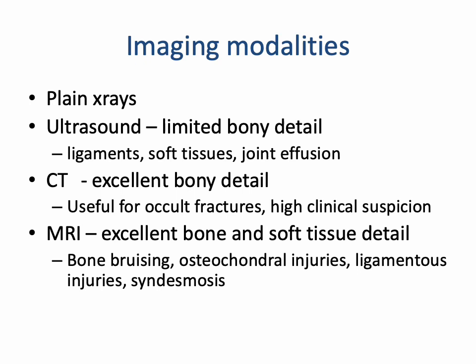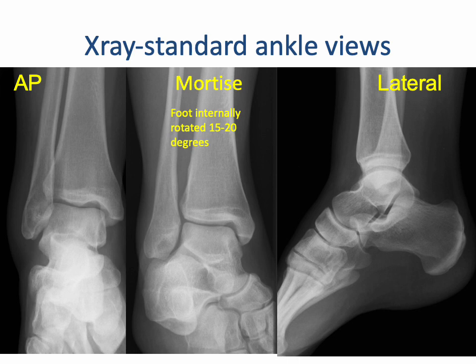The primary modalities of imaging used in the ankle and foot are planar radiographs, mostly ultrasound for ligaments, soft tissues and for joint effusions. CT has great bony detail, especially for complex fractures, and MRI provides fantastic bone and soft tissue detail, particularly looking at ligamentous injuries, syndesmotic injuries, osteochondral injuries and bone marrow edema or bone bruising.